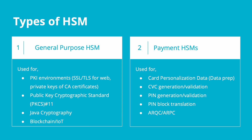The second type of HSM is the payment HSM. Payment HSMs are used for all life cycle operations in payment cards — card personalization data, CVC generation and validation, PIN generation and validation, PIN block translation, ARQCs, ARPCs, and so on. Payment HSMs have card-related algorithms hardwired into them, which makes their performance faster. That is the primary difference between a general purpose HSM and a payment HSM.